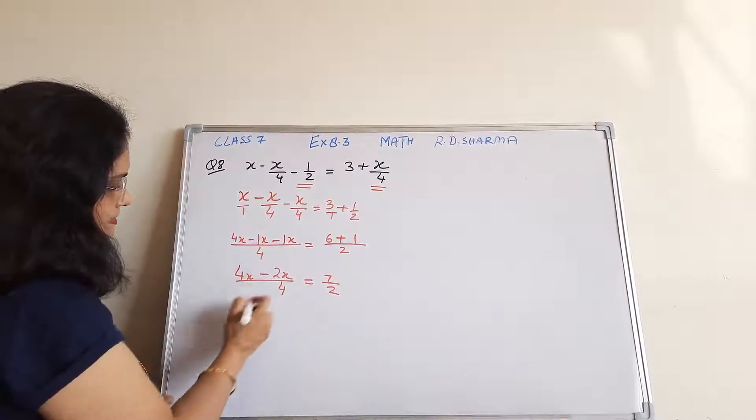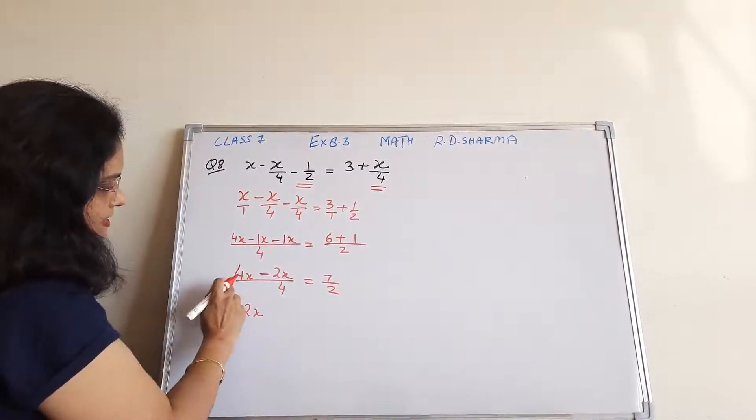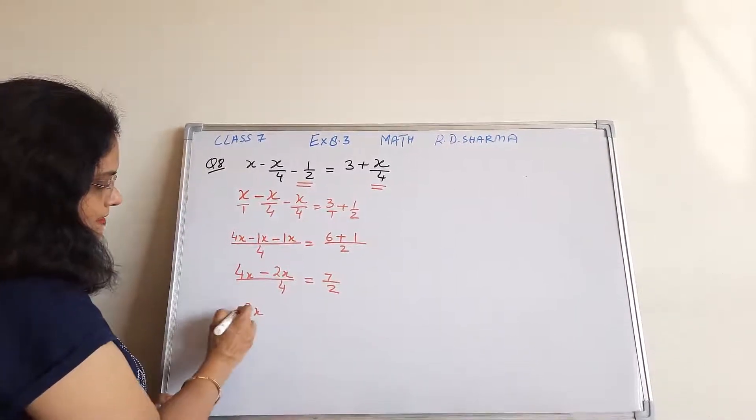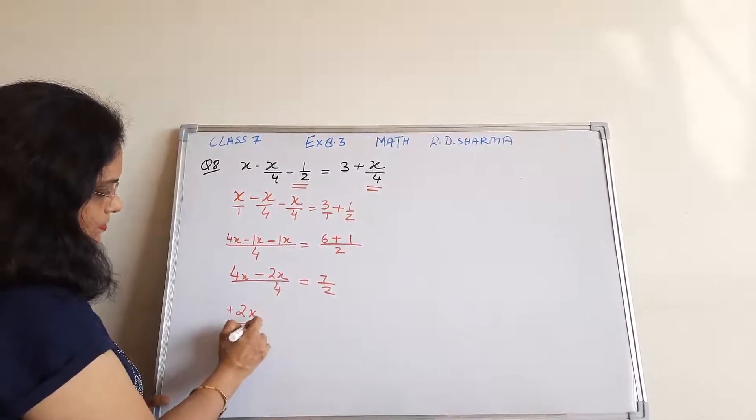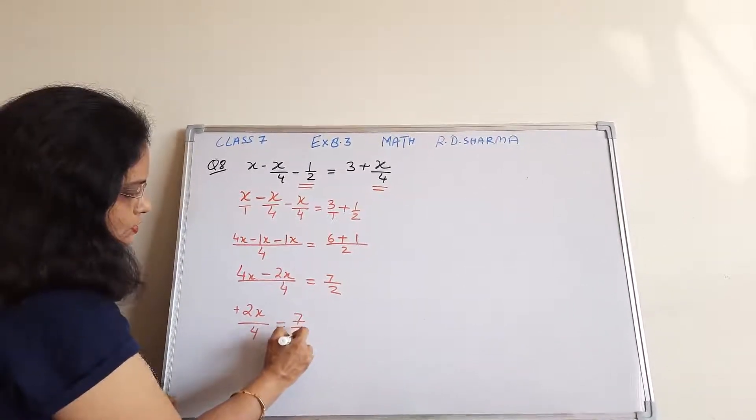Now this becomes 2x upon 4 is equal to 7 upon 2.